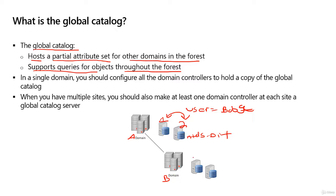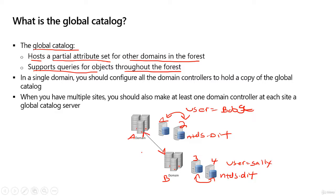If you go to domain B, this will have domain controllers 3 and 4, but they are completely separate. Objects created here — so if I created a user Sally, Sally would only replicate between these two domain controllers. Objects here live in the database and get replicated here. So completely separate ntds.dit file stores a completely separate set of objects. These two domains are simply connected to each other through what we call a trust relationship, but each one has its own set of objects. So whenever you see multiple domains in a forest like this, always think of it as separate databases.